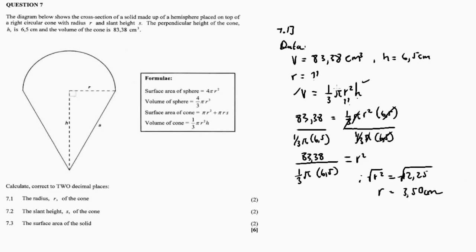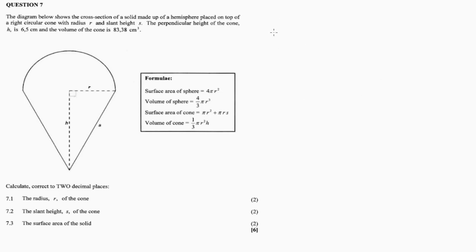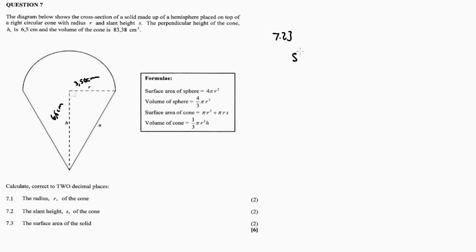7.2: calculate the slant height s of the cone. Now that we have the radius r = 3.50 cm and the height h = 6.5 cm, these are both sides of a right triangle, and the slant height is the hypotenuse. So we use the Pythagorean theorem to calculate s.